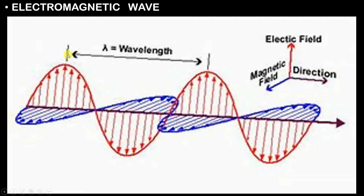The red color sine wave is vibrating in a plane which is in a vertical direction, while the blue color sine wave is vibrating in a horizontal direction, and both these planes are perpendicular to each other. Using the axes: the red color wave is vibrating along the y-axis and the blue color wave is vibrating along the z-axis.